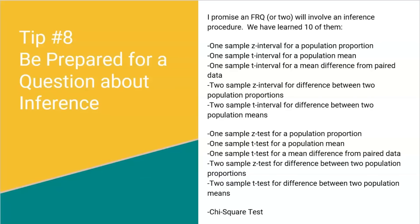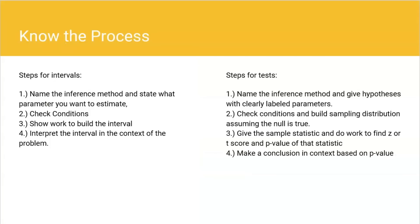When it comes to inference, make sure you know the process, because showing you know it can still get you points even if you forget the specifics. Both intervals and tests involve four steps. For an interval: name the procedure and state what you're looking for; check the conditions to confirm your sampling distribution is normal; show work to build the interval; and interpret the interval in context. If you forget how to build it, make an interval up and then interpret it — that still gets you points.